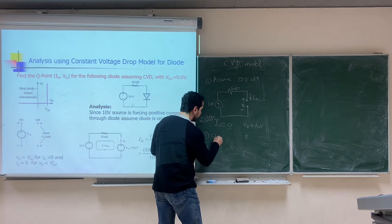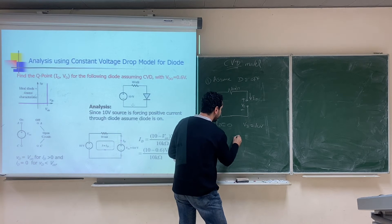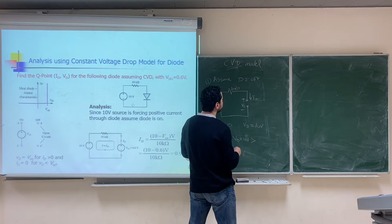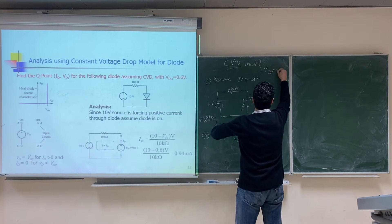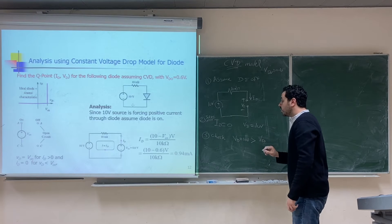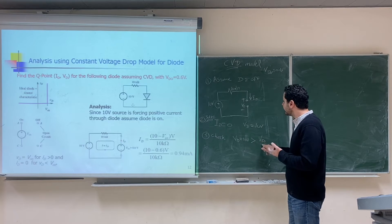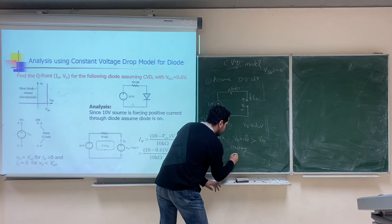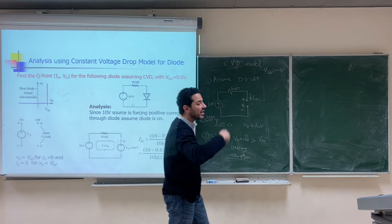Now check: we find that V_D = 10V, which is greater than V_D0 = 0.6V. It is impossible for V_D to be greater than V_D0 while the diode is off, so this is a wrong assumption. We forget everything calculated here and repeat the problem.